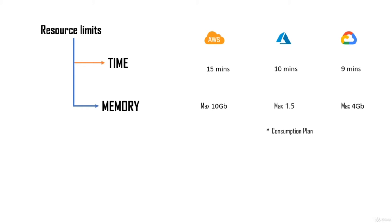Even though this is not strictly a disadvantage, it is something you should be aware of. If you're using AWS Lambda, your function cannot run for more than 15 minutes. If you're using Azure under the consumption plan, your function cannot run for more than 10 minutes. These limits differ for other plans. If you're using GCP, the maximum your code can run is 9 minutes.